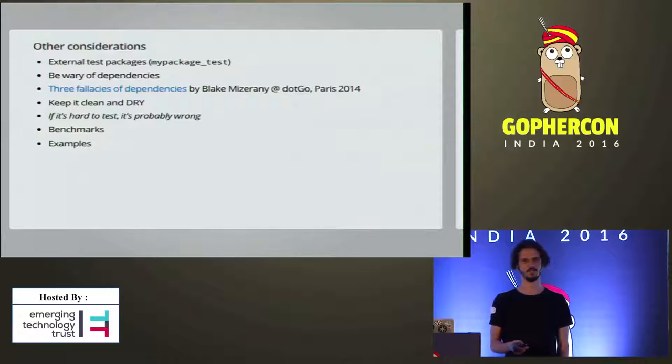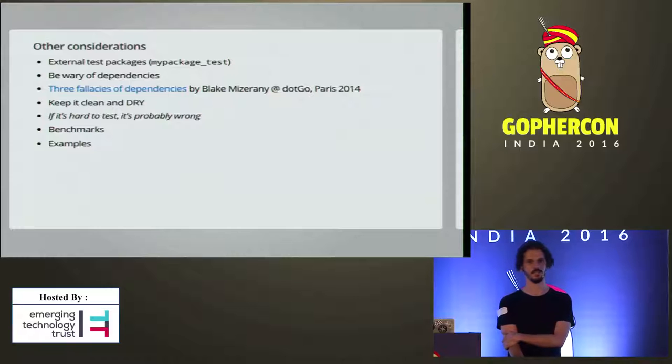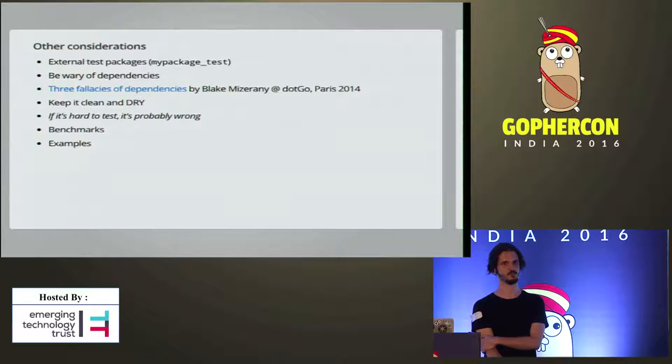Another thing — be wary of dependencies. Even though you might be coming from Ruby, Java, or JavaScript, and you might be used to using assertion libraries and frameworks, I would advise you to resist the urge and try to keep it simple, as Go's philosophy is. I highly recommend you watch 'The Three Fallacies of Dependencies', a talk by Blake Mizorani at .co.paris, available on YouTube. He's also coming from a Ruby background and has gone through this story of trying various assertion libraries and frameworks, and you can see his conclusions.